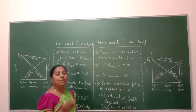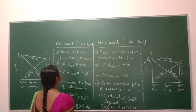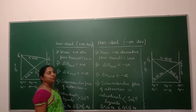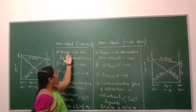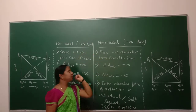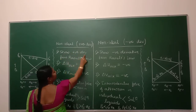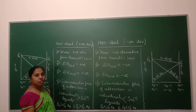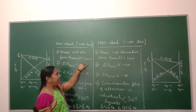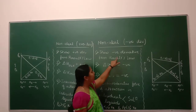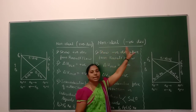Next, we will study the different types of non-ideal solutions. There are two types: non-ideal solution with positive deviation and non-ideal solution with negative deviation. Any solution that shows positive deviation from Raoult's law can be taken as a non-ideal solution with positive deviation. Similarly, if any solution shows negative deviation from Raoult's law, it is a non-ideal solution with negative deviation.